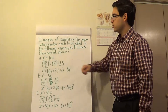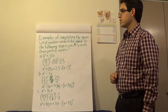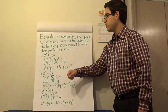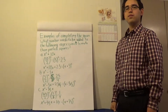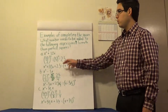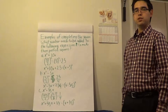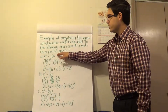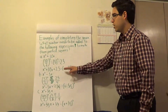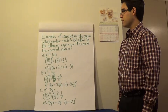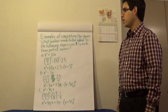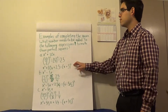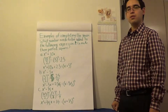We need to look at the coefficient of x. When we divide the coefficient of x by 2, that will give us 5. And when you square this, you will get 25. And by adding 25 to this expression, you'll get x squared plus 10x plus 25, which is going to be equal to x plus 5 squared — a perfect square.